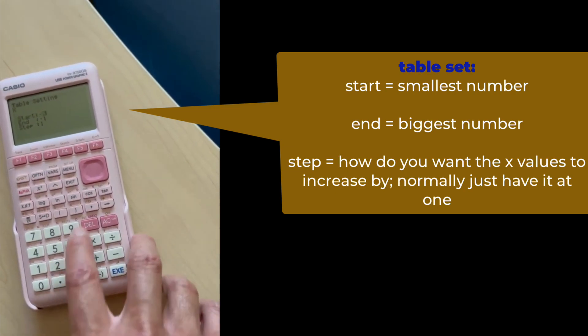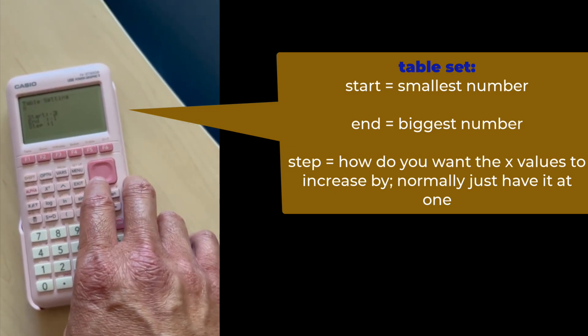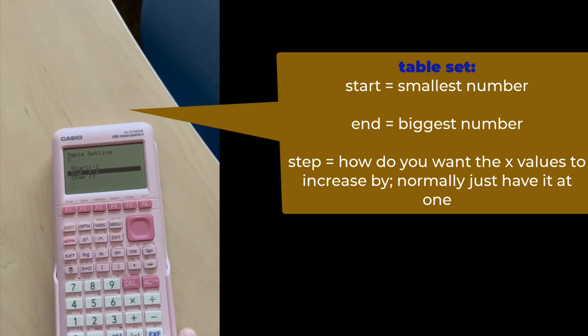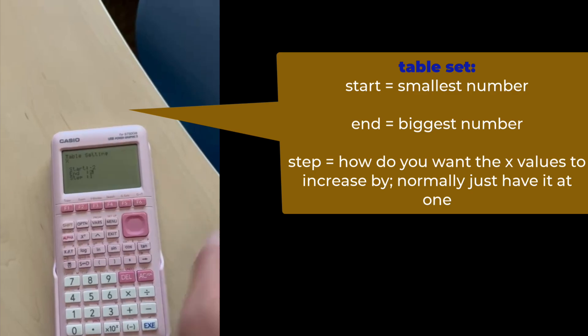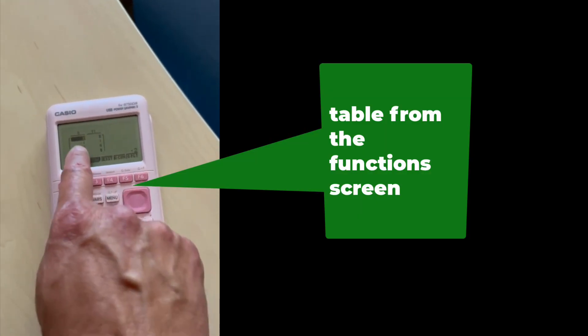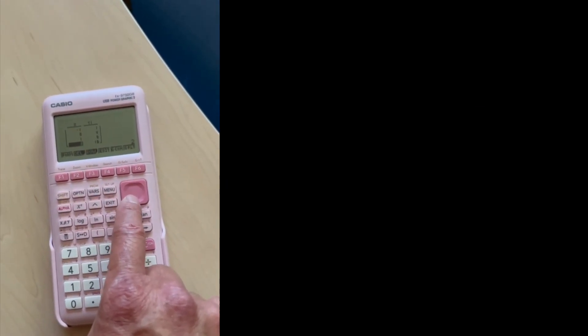So you want negative 2. Press execute. Negative 2, negative 1, 0, 1, 2. And then you just want to increase by 1's. Okay? Now I can go to table, and now it's adjusted. You see it? Is that nice?